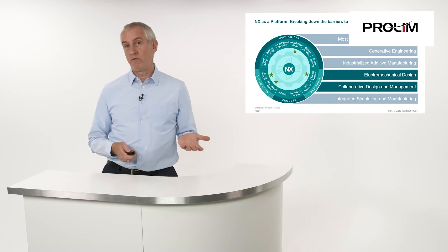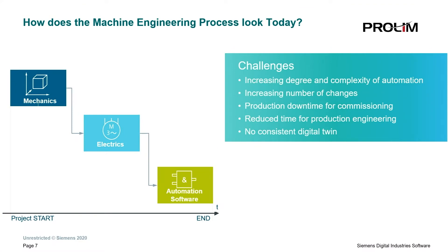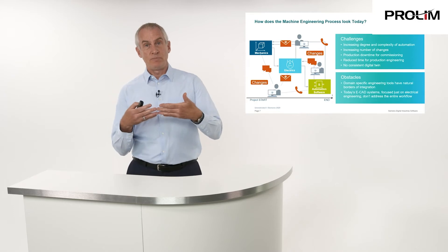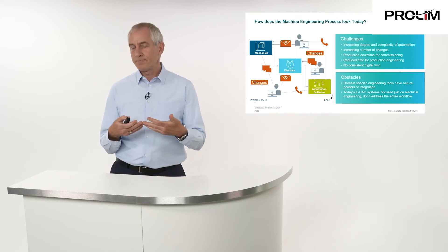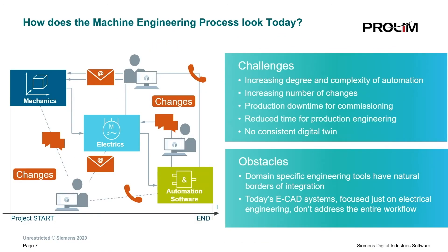But where do you typically come from? Typically, you come from a traditional world where the mechanical engineer starts, hands over the design results to the electrical department. They do their electrical schematics, bills of materials of electrical devices, and hand that over to automation. The problem is that the interfaces between those domains are not standardized — they are weak and error-prone. A lot of communication has to take place, and electrical design is still not really automated. It is still a lot of manual painting of electrical schematics.